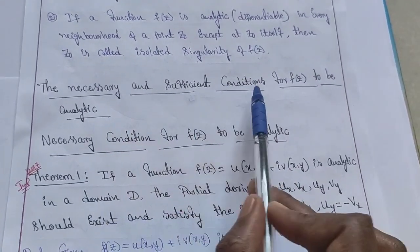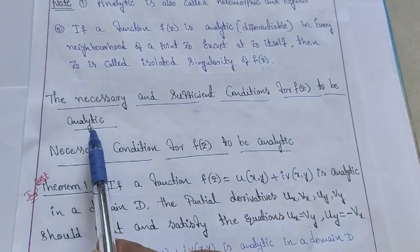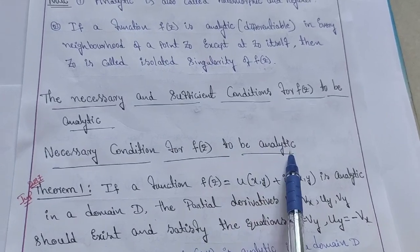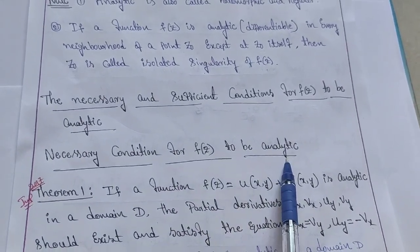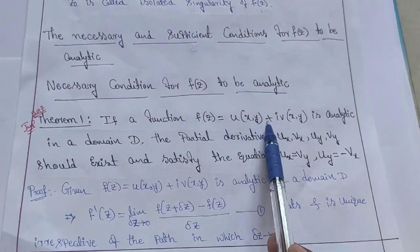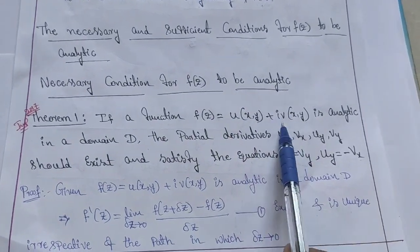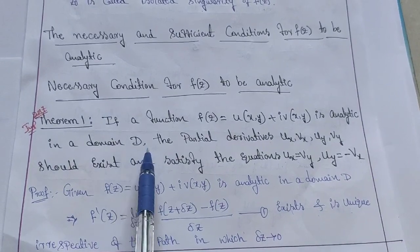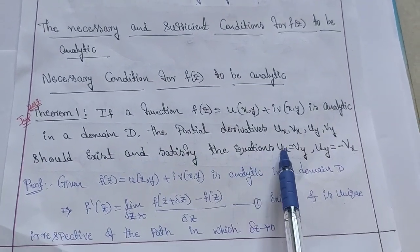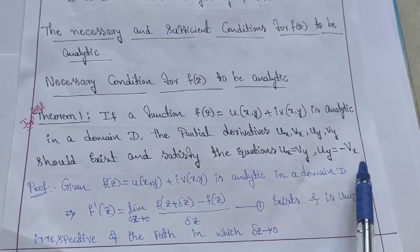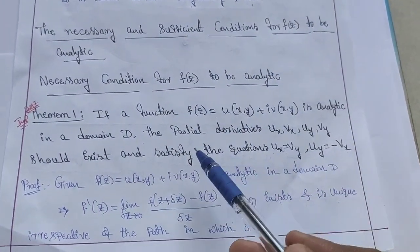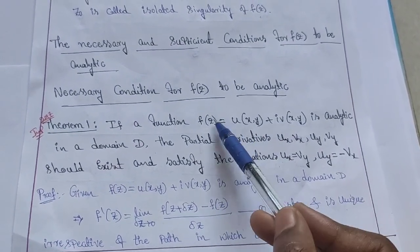Here we also see the necessary and sufficient conditions for f of z to become analytic. The necessary condition for f of z to be analytic: if f of z equals U plus iV, where U equals U(x, y) and V equals V(x, y), is analytic in a domain D, then the partial derivatives Ux, Vx, Uy, and Vy must exist and also satisfy Ux equals Vy and Uy equals minus Vx. This is the necessary condition for f of z to be analytic.